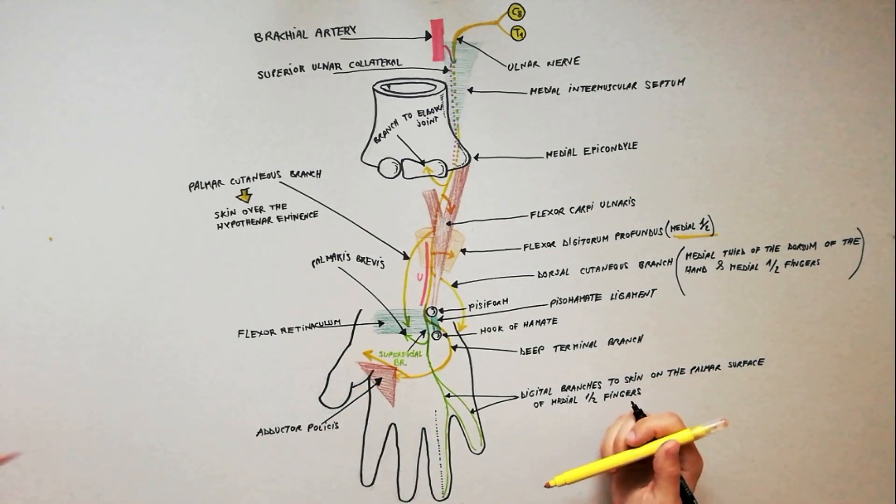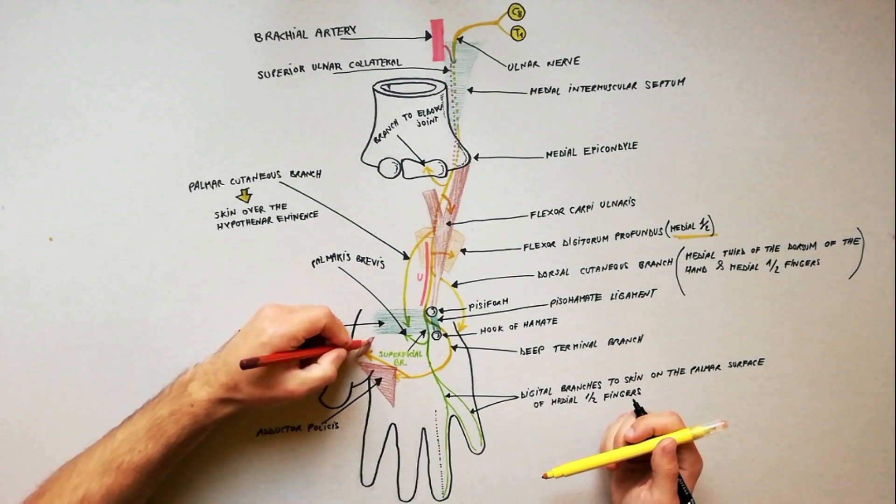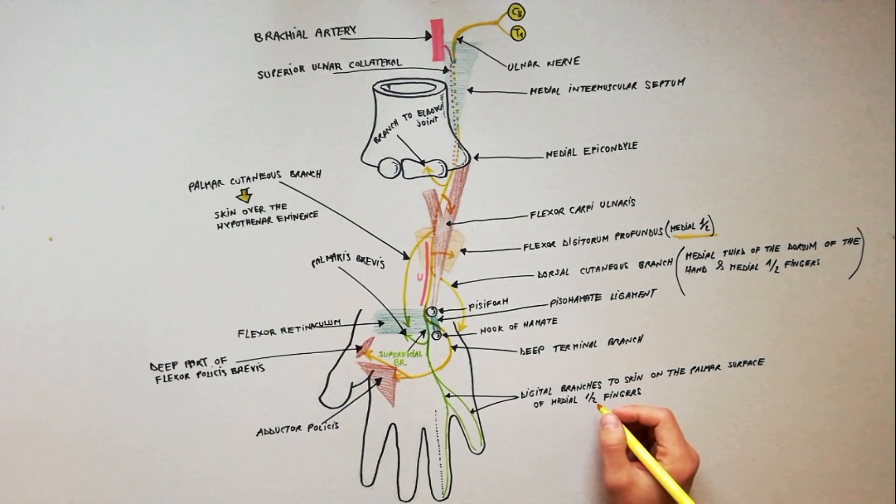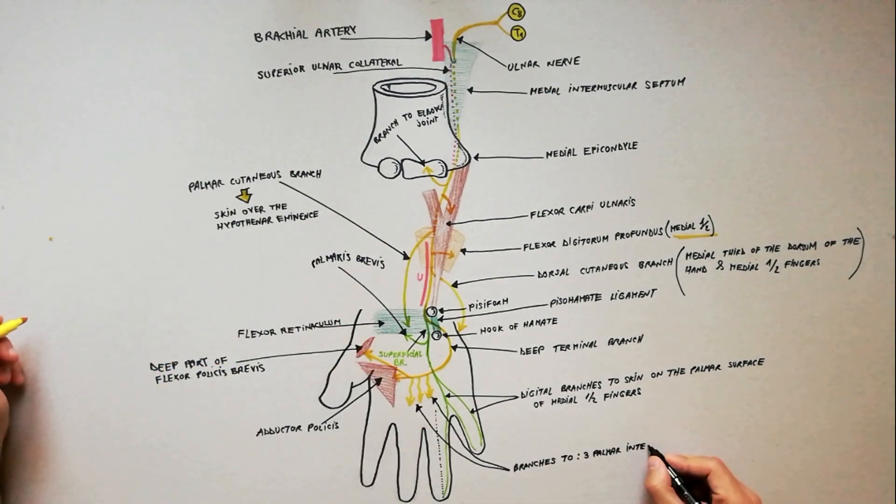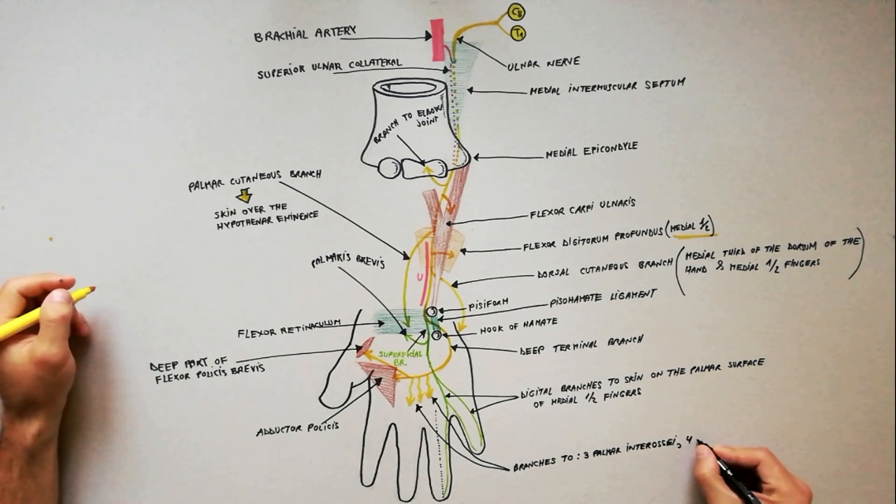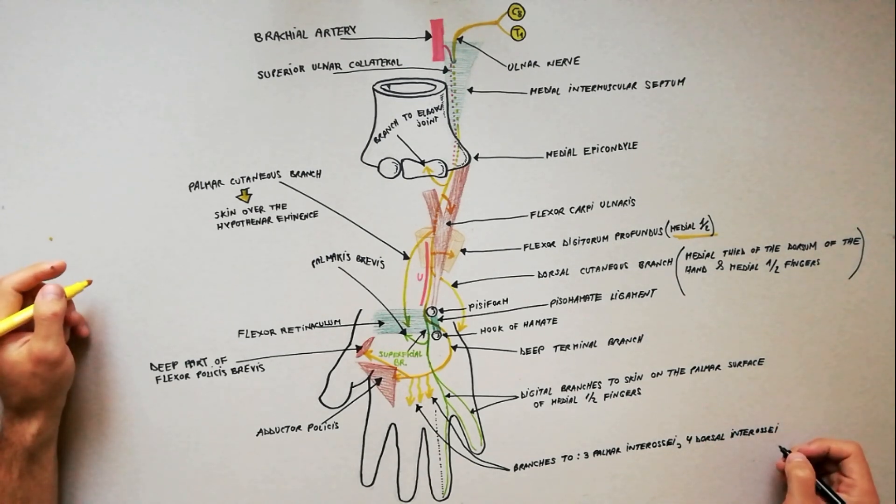It also gives branches to the deep part of flexor pollicis brevis, branches to 3 palmar interossei, branches to 4 dorsal interossei, and branches to the 2 medial lumbrical muscles.